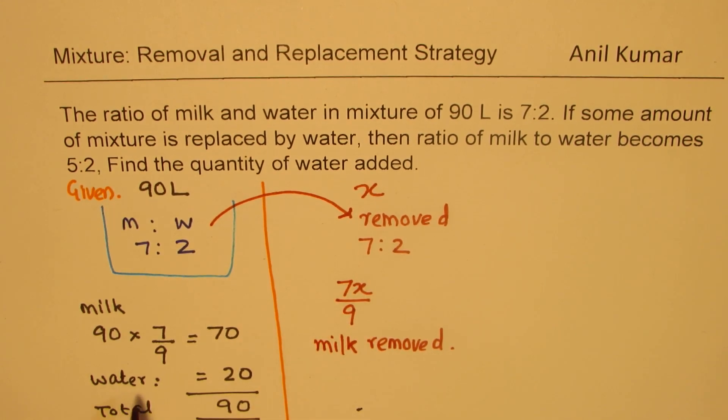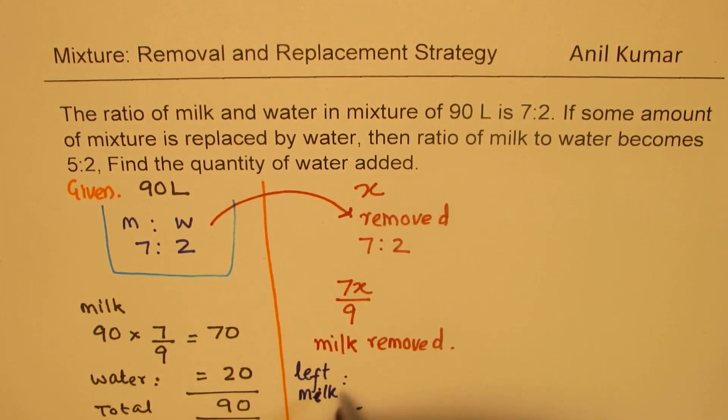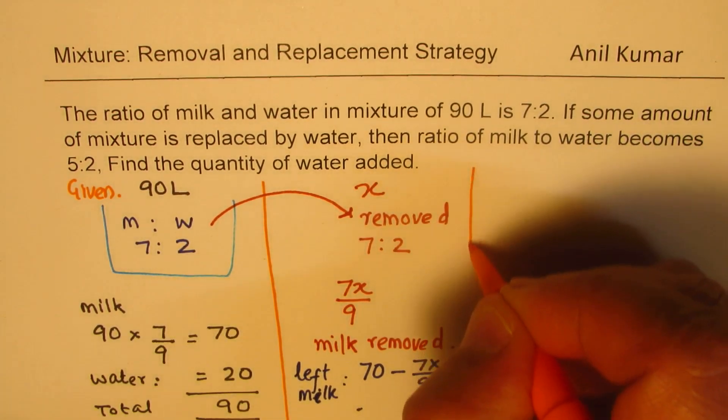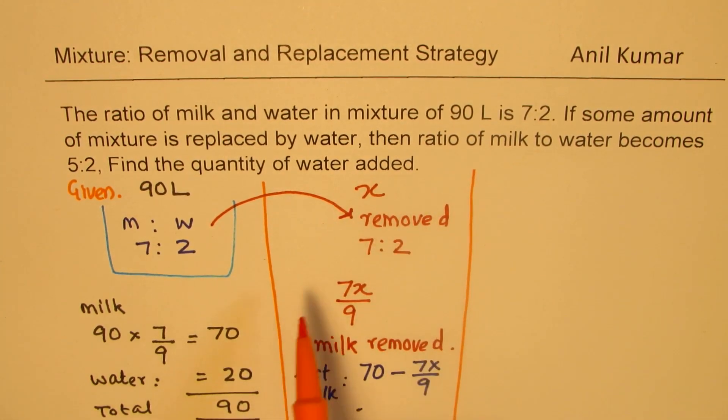We had milk of 70 litres out of which that much has been removed. So what is left? We can now write that the left milk will be how much? Initially it was 70, so 70 minus 7x over 9 is left. So that is what happens when you remove x quantity.